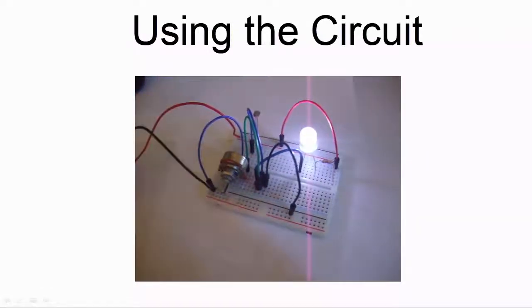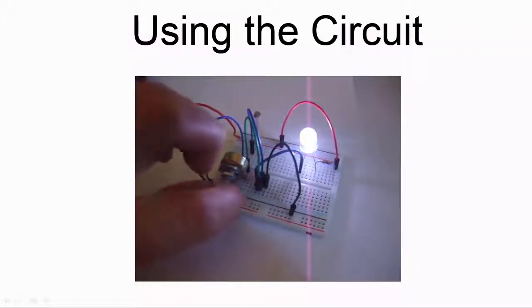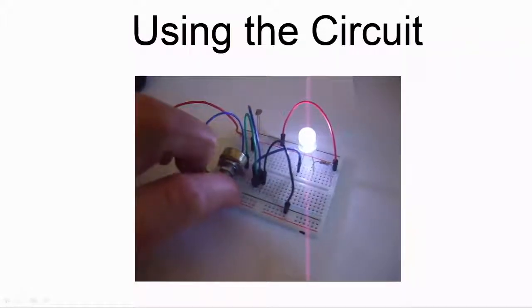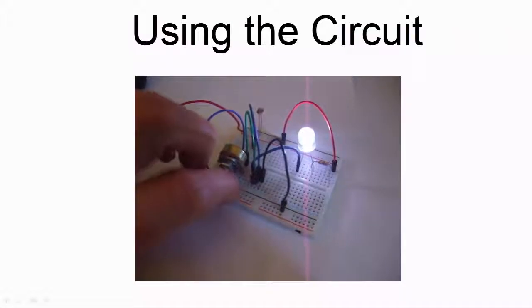The variable resistor enables you to set the sensitivity of the nightlight, so that you can determine at what level of light the LED becomes illuminated.